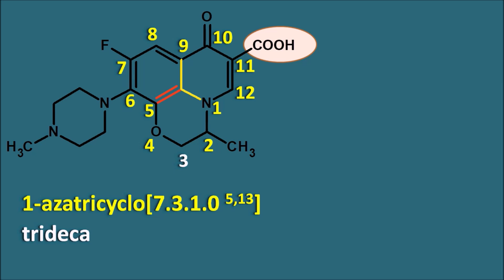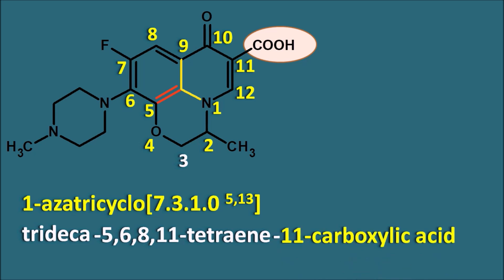Double bonds are present at positions 5, 6, 8, and 11. So it can be written as 5,6,8,11-tetraene. For each double bond we take the least-numbered carbon: double bond at 5–13 → we take 5; at 6–7 → we take 6; at 8–9 → we take 8; at 11–12 → we take 11. So 5,6,8,11-tetraene is present. A carboxylic acid group is present at position 11, giving the primary suffix '11-carboxylic acid.' So the root name is: 1-aza-tricyclo[7.3.1.0^(5,13)]trideca-5,6,8,11-tetraene-11-carboxylic acid.